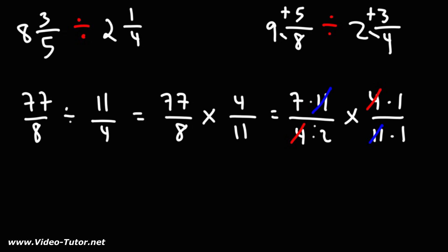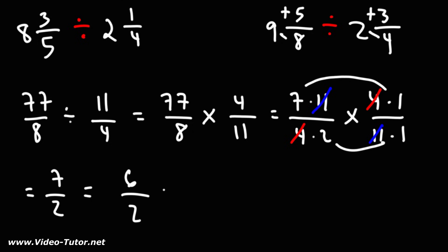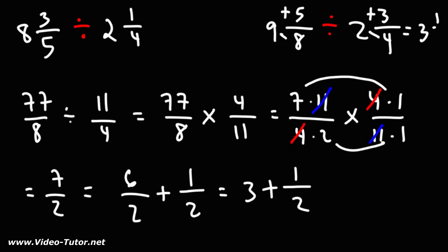So now we can multiply across. We have 7 times 1, which is 7. 2 times 1 is 2. Now, 7 over 2 — we want to write that as a mixed number. What is the highest multiple of 2 under 7? That's going to be 6. So I'm going to break up 7 over 2 into 6 over 2 plus 1 over 2. 6 divided by 2 is 3, and so we have 3 plus 1 half. When you have a whole number plus a fraction, you can write it as a mixed number.